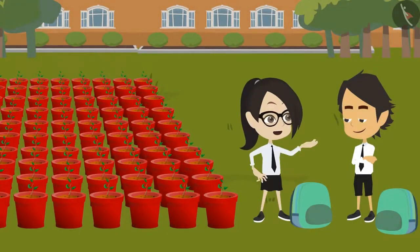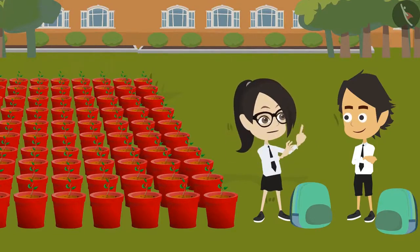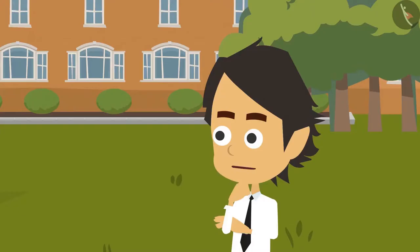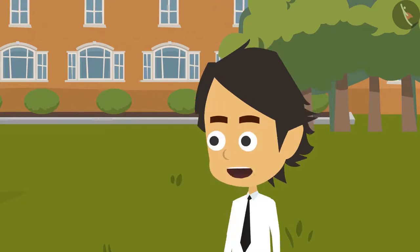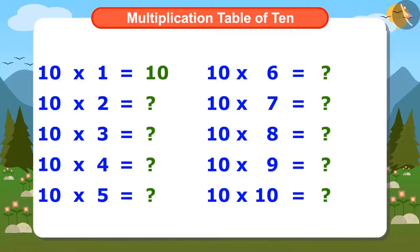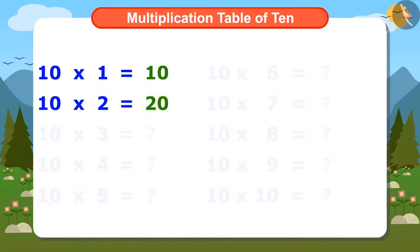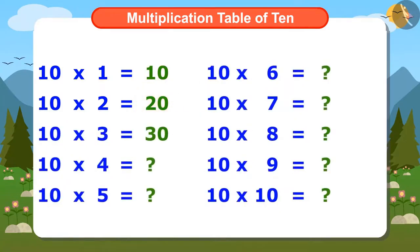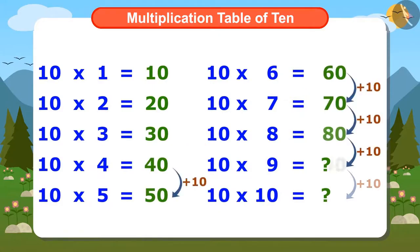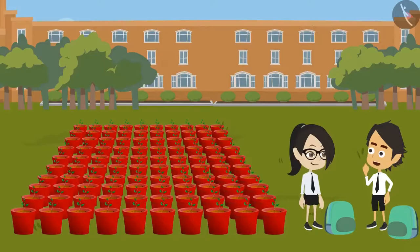Ayushman, I know another way to find the Multiplication Table of 10. If we add 10 to the first number 10 of the Multiplication Table of 10, we get the second number, which is 20. And so, if we keep adding 10 to each number, we can find the entire Multiplication Table of 10.